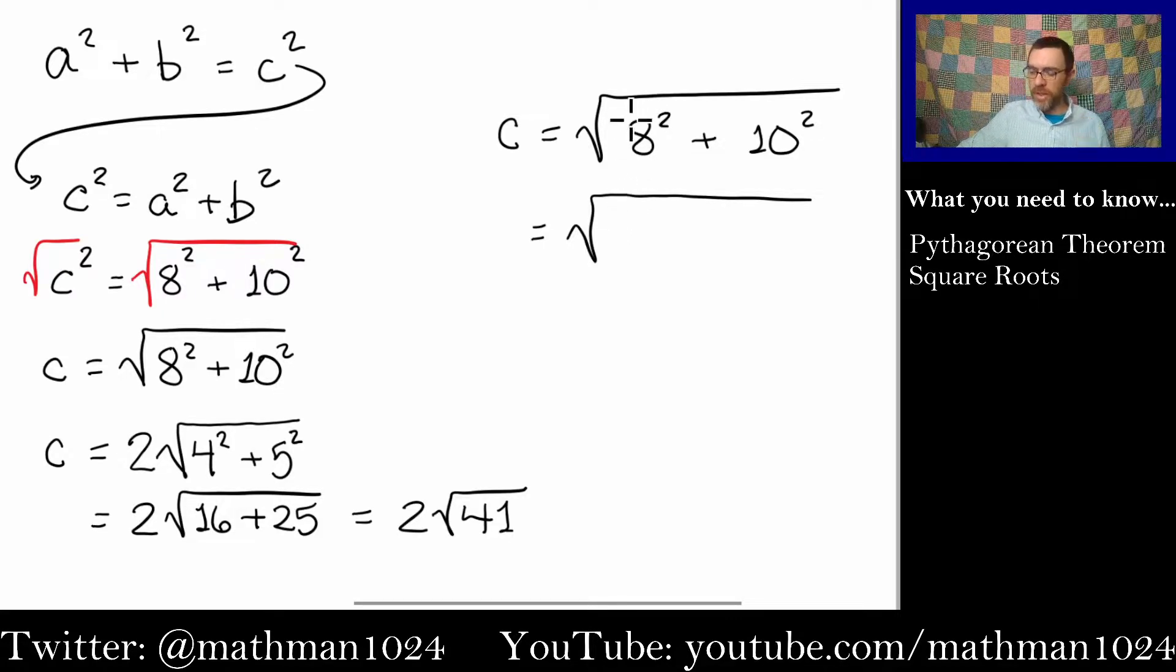So 8 is really, and again, you can see that in parentheses if that helps you, 8 is 2 times 4. So this would become 2 squared times 4 squared. And then for the 10, since 10 is 2 times 5, 10 squared becomes 2 squared times 5 squared. And if you remember factoring, we see here that we have this common factor of 2 squared. So inside the radical, it's a big square root, inside the radical you have 2 squared.